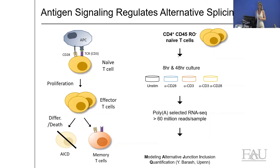We use primary naive T-cells from human donors, activating them through the CD3 T-cell receptor and CD28 receptors using antibodies. We've looked at both the normal co-stimulatory situation — which most closely mimics normal T-cell activation — and used CD3 stimulation or CD28 alone as controls. We then harvest cells after various time points, isolate RNA, carry out deep sequencing using RNA-seq, and assess various parameters of gene expression through various pipelines.